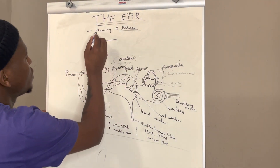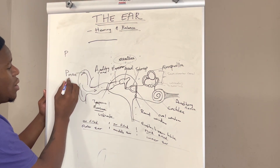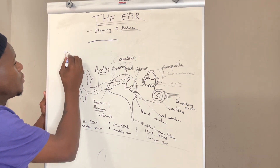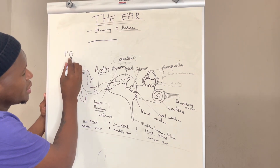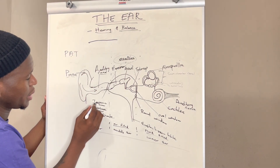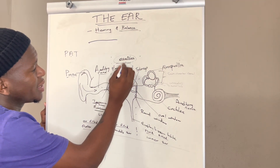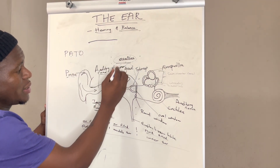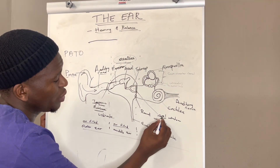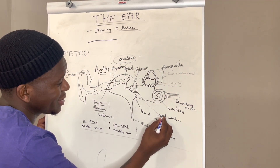Now let's start with the hearing process. First, the pinna grabs and directs sound into the auditory canal. The auditory canal sends the sound waves to the tympanic membrane, which then vibrates. As the tympanic membrane vibrates, it causes the ossicles — the hammer, anvil, and stirrup — to vibrate as well. Since the ossicles are attached to the oval window, the oval window will also vibrate.